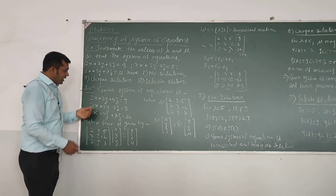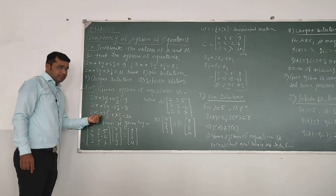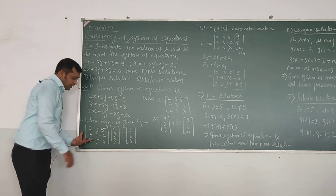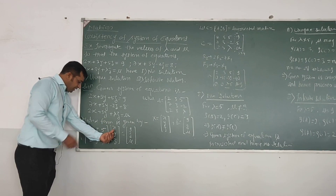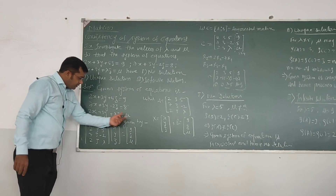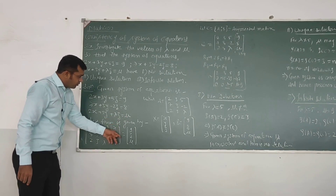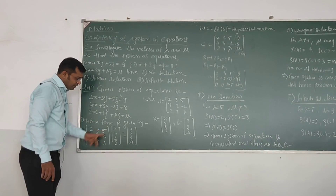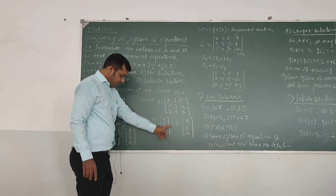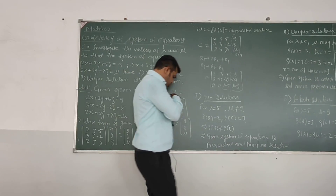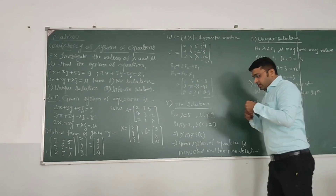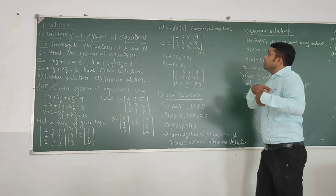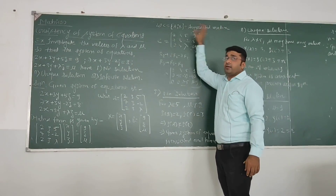To start the solution, we first write down the given system of equations and then convert it into matrix form. We collect the coefficients of x, y, z into one matrix A, multiplied by the column vector x, equals the column vector containing 9, 8, and mu. For convenience, we call this matrix A, the vector x, and the vector b. Then we form the augmented matrix C, which is the combination of A and b.